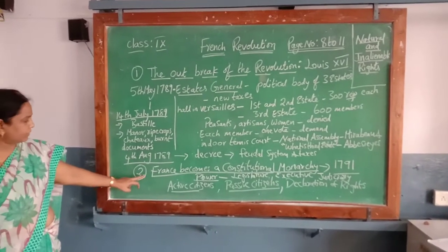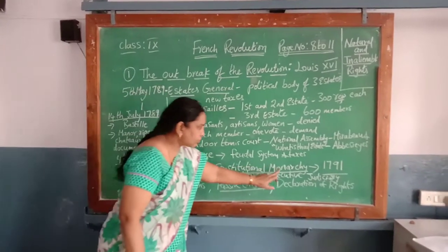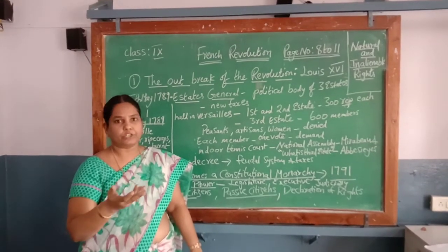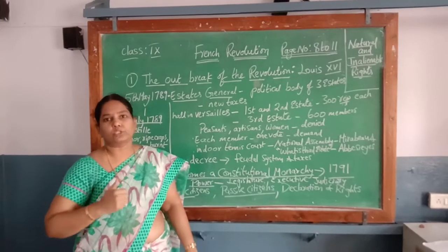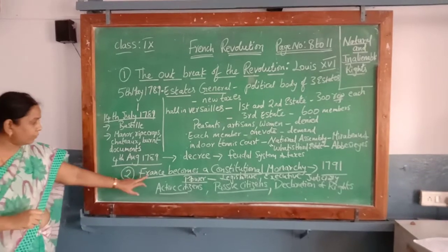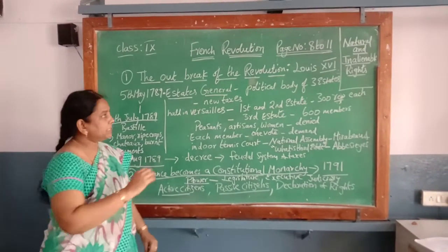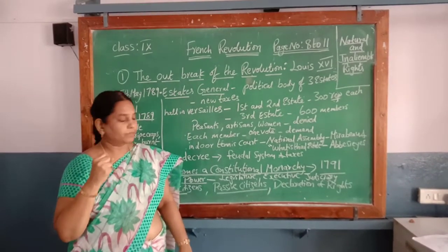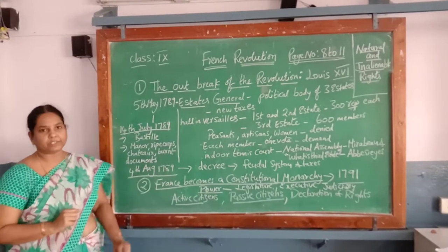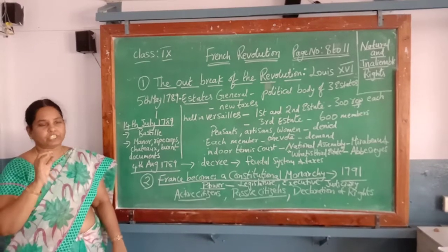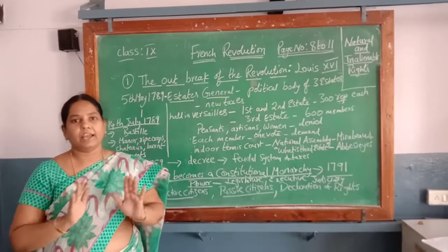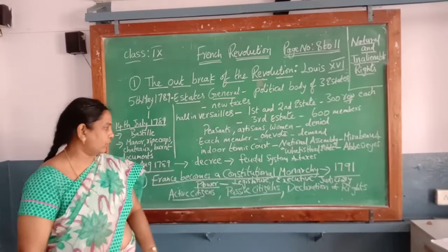Now let us learn about France becoming a constitutional monarchy. Monarchy means rule by the king where he holds absolute power — the legislature making law, executing the law, and maintaining the law like courts do. All three powers were vested in one person. Now Louis XVI was holding that power. France became a constitutional monarchy, meaning the king had to decide according to the constitution drafted by the national assembly after the decree was passed. The important event of 1791 is that France became a constitutional monarchy. From 1791 onwards the king agreed to rule according to the constitution.